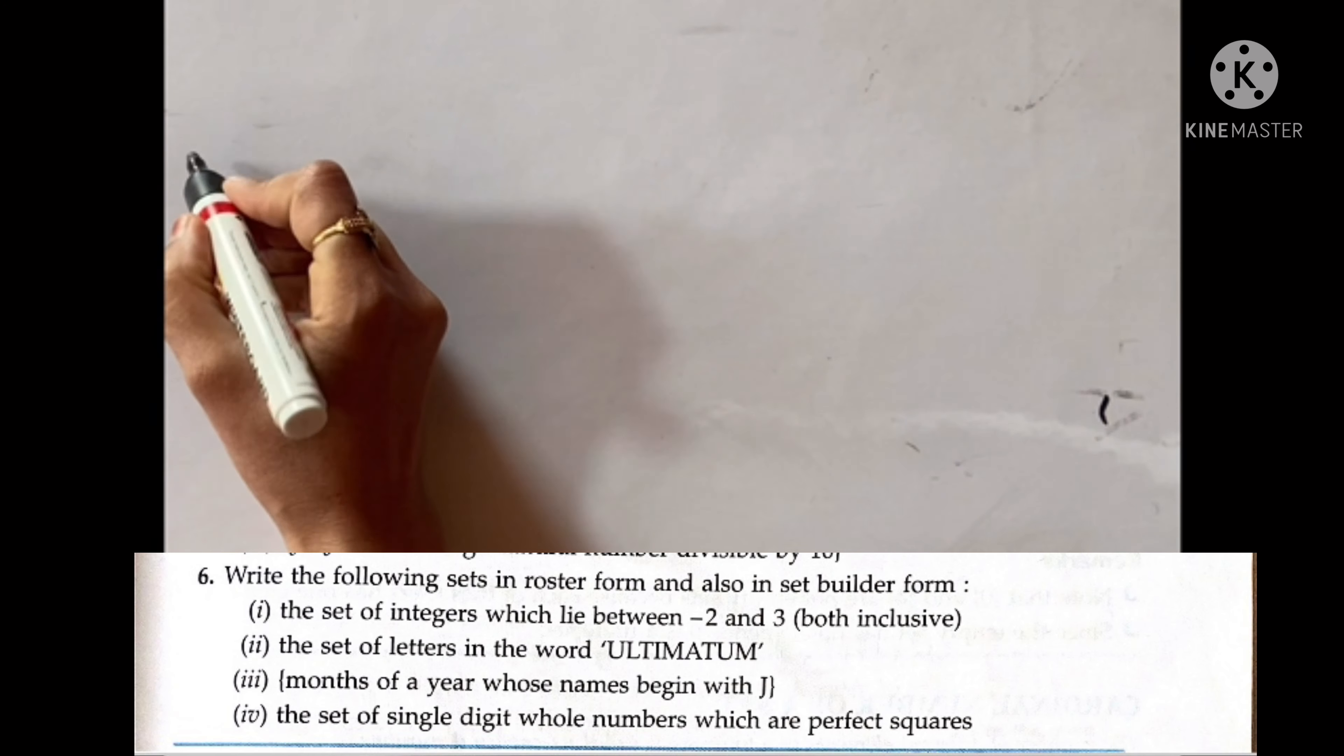In this we will discuss exercise 5.1 question number 6. Write the following sets in roster form and also in set builder form. We have to write in roster form and set builder form. The first is the set of integers which lie between minus 2 and 3. We have to write between minus 2 and 3. This is your question number 6 first part.